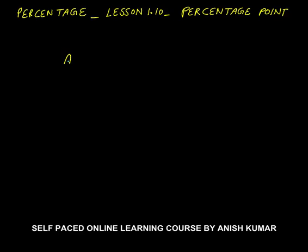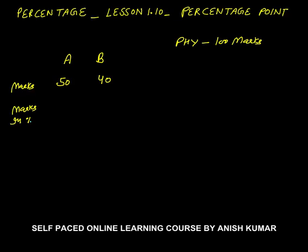Now for example, there are two students A and B, and their marks in a physics paper. The physics paper is of 100 maximum marks. A got 50 marks and B got 40 marks. So marks in percentage: A would get 50% marks and B would get 40% marks. Now one term is percentage,